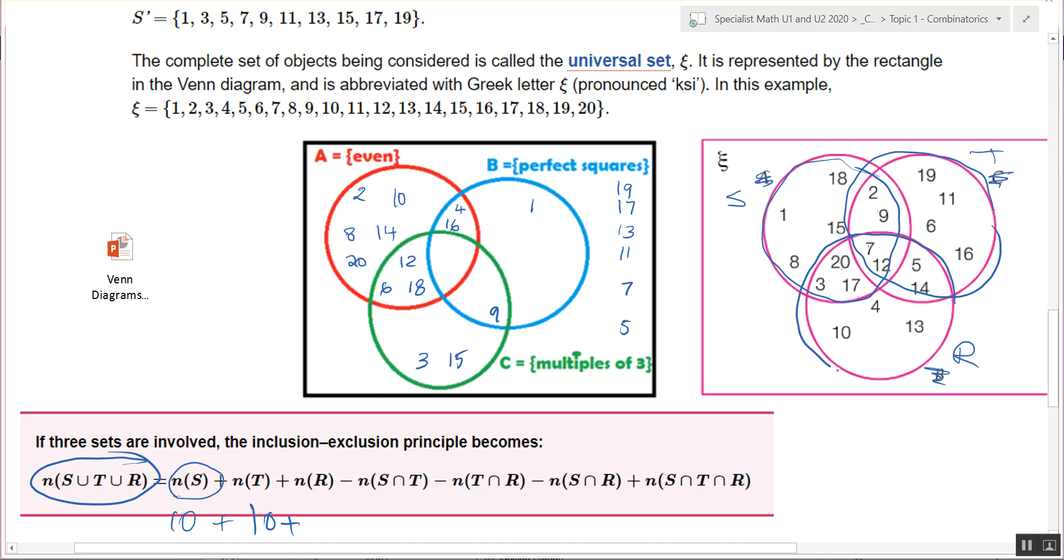Plus the number in R. 1, 2, 3, 4, 5, 6, 7, 8, 9, 10, 11. I think I counted that right. Oh no, 10. Is everyone with me so far?